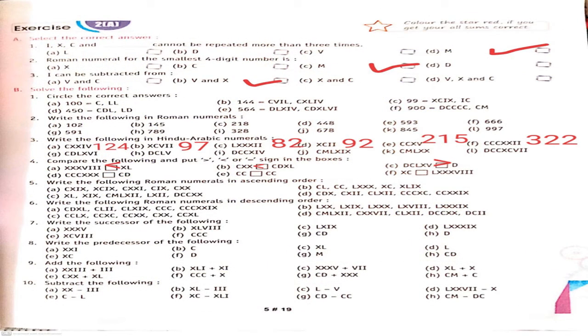Question 3: write the following in Hindu-Arabic numerals — the opposite of question 2. Part A: CXXIV — C is 100, XX is 20 (10+10), IV is 4, so the number is 124. Part B: XCVII — XC means 100 minus 10 = 90, VII means 7, so the number is 97. Part C: LXXXII — LXXX means 80 (50+10+10+10), II means 2, so the number is 82. Similarly, solve the other parts.